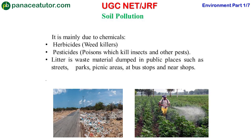Next is soil pollution. Soil pollution is mainly due to chemicals like herbicides and pesticides. Herbicides are chemicals used in the field to destroy unwanted plants. Pesticides are chemicals that help to control insects and pests. Using these chemicals causes soil pollution. Litter is another problem for soil pollution — litter is waste material dumped in public places such as streets, parks, picnic areas, bus stops, and near shops.